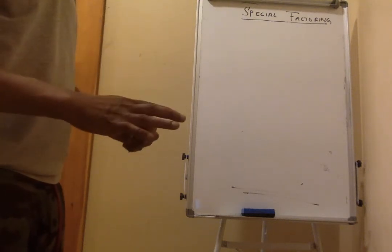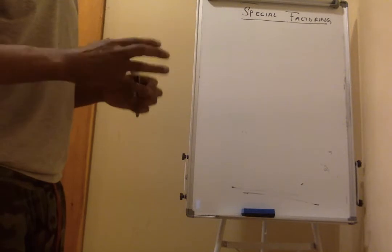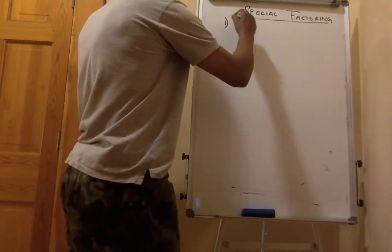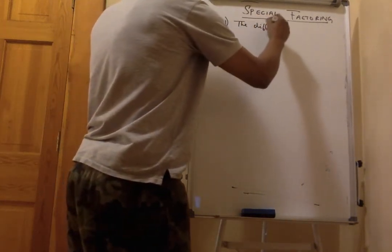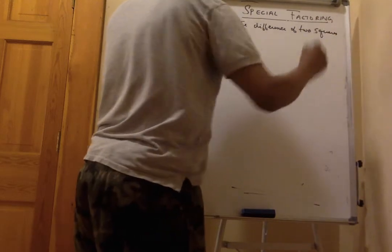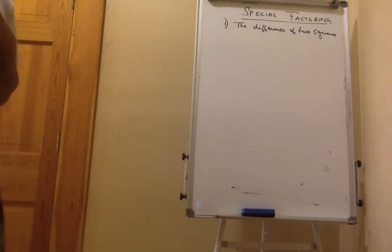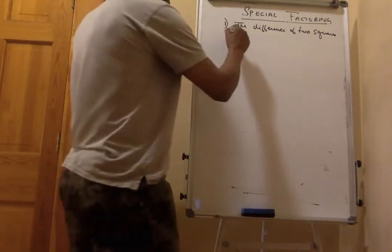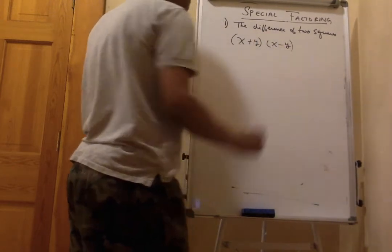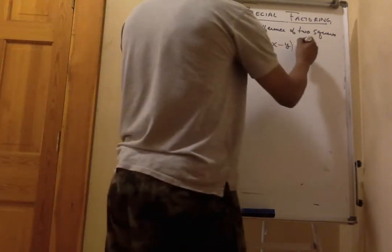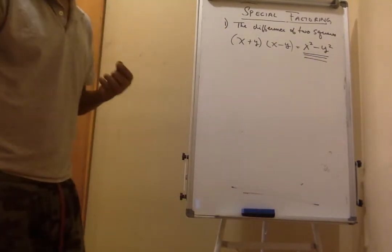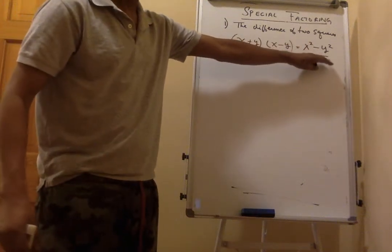In this session we're talking about special factorization. The first topic is the difference of two squares. If you remember, when we multiply x plus y by x minus y using FOIL, we end up with x squared minus y squared. This is what we call the difference of two squares. Our task is: if the difference of two squares is given, can we write it in two binomial factors?